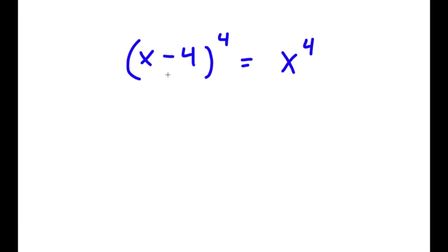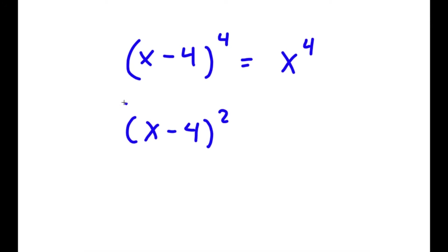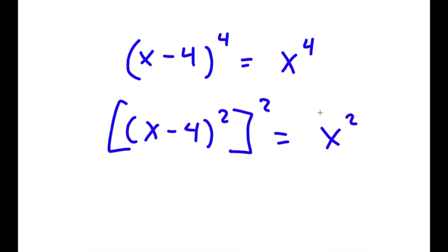In this problem, I have x minus 4 to the power of 4 is equal to x to the power of 4. So to start, I'm going to rewrite this as x minus 4 squared to the power of 2 is equal to x squared to the power of 2.